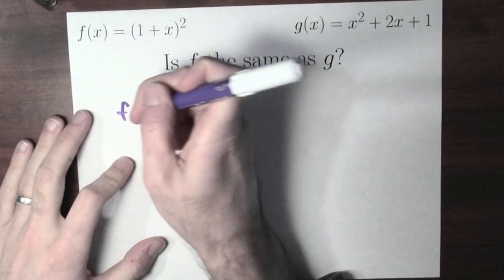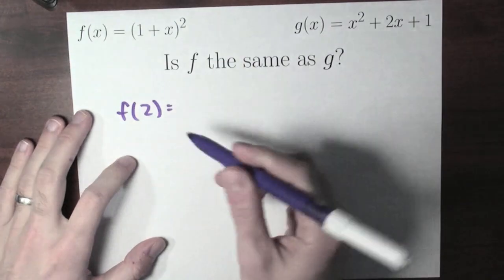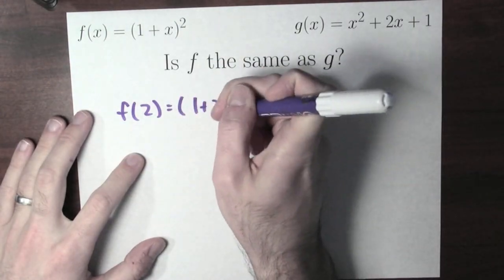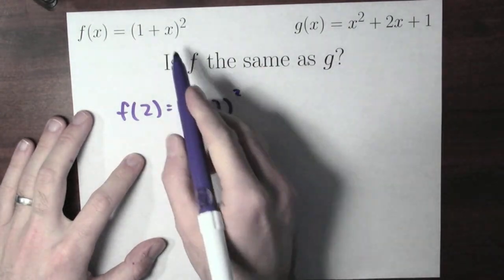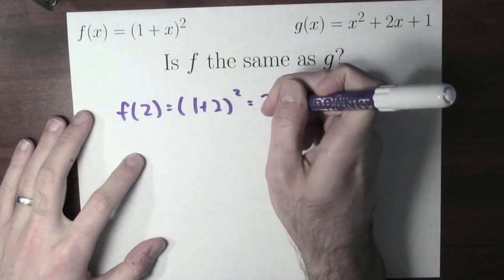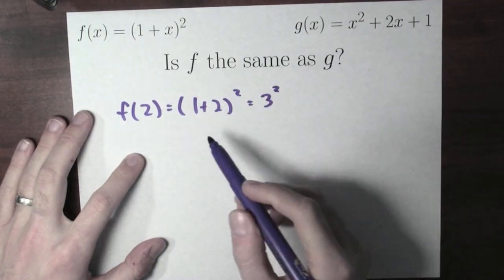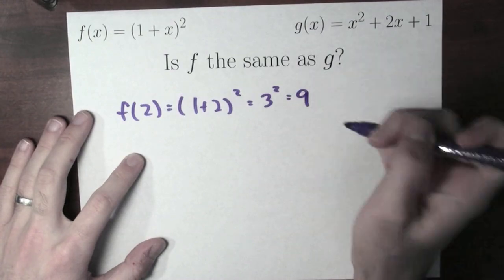Well, let's try. Let's look at a value like f of 2. f of 2 is (1 + 2) squared, just replacing the x by 2. 1 plus 2 is 3, 3 squared is 9.